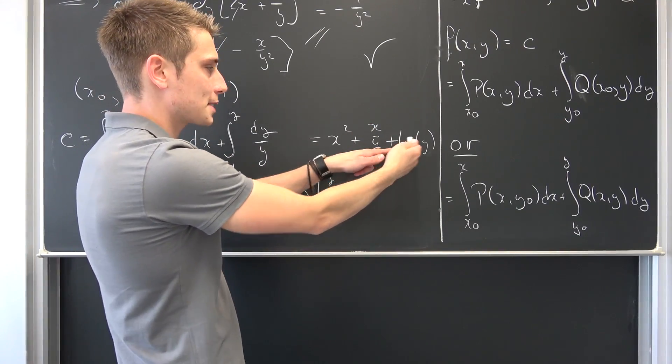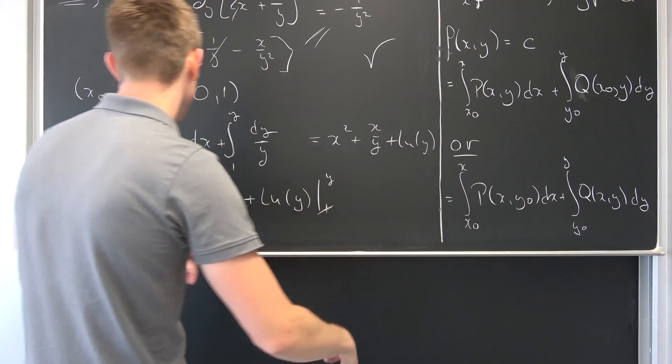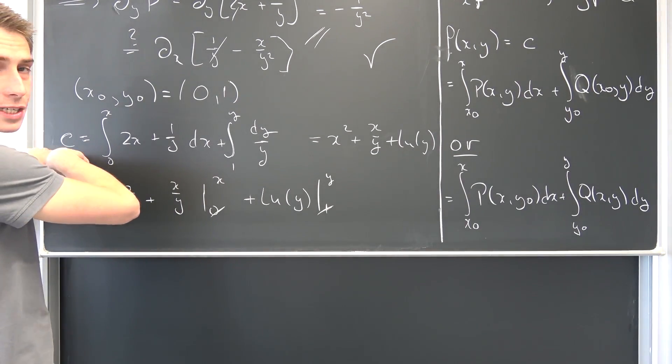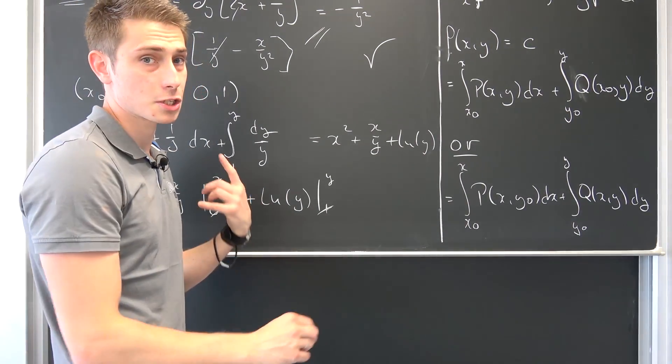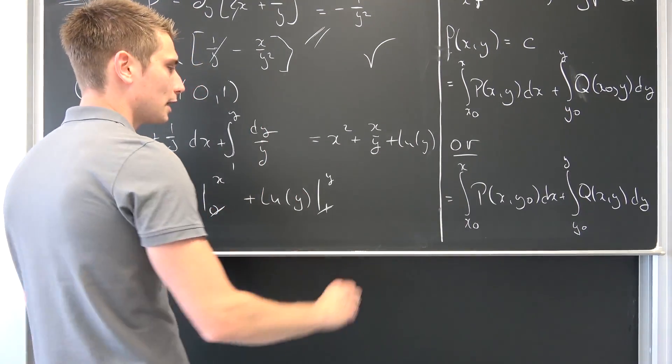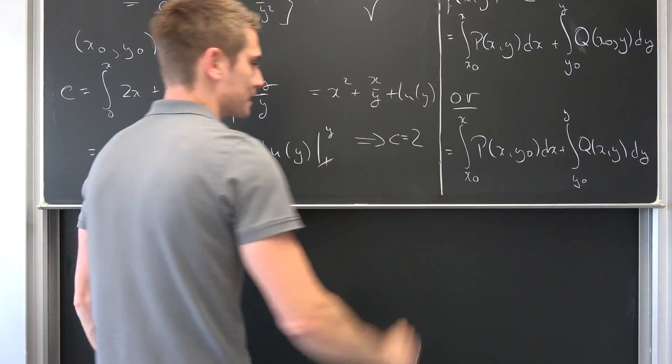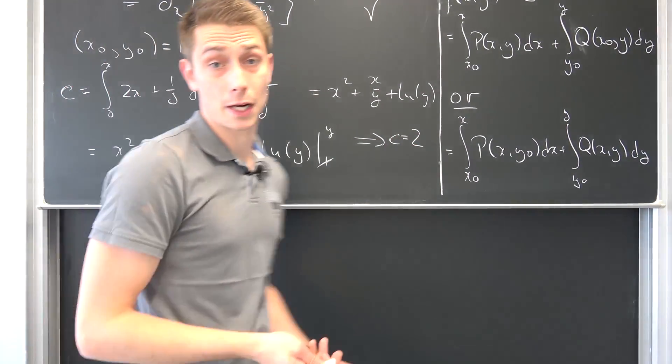This makes 2 plus natural log of 1, that's 0, meaning our constant C right here, or one parameter family of solutions, is nothing but 2. That's something we can conclude—C is nothing but 2. Easy as π.